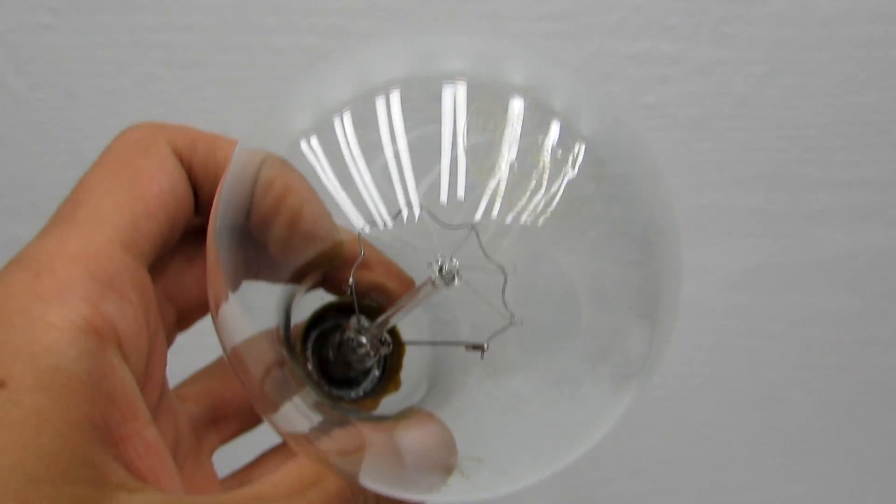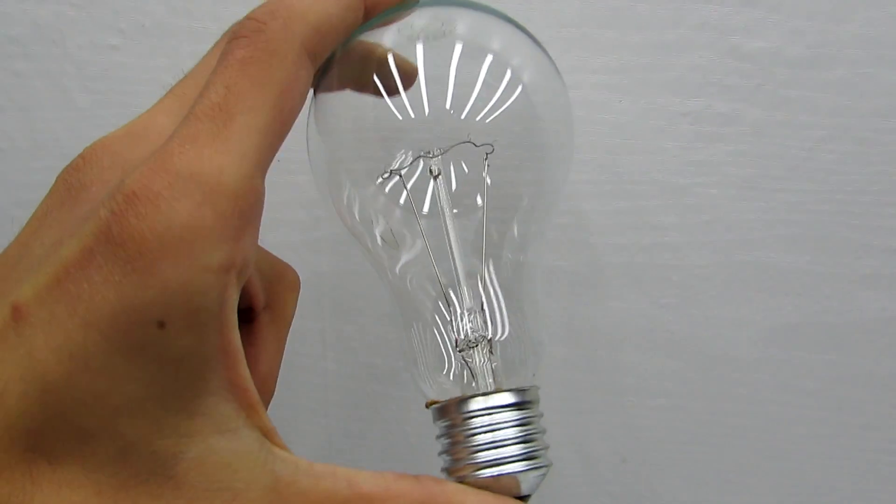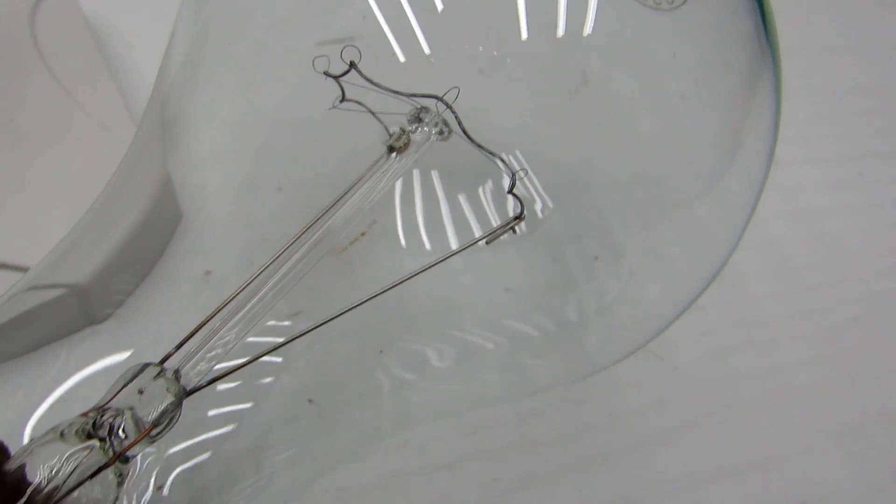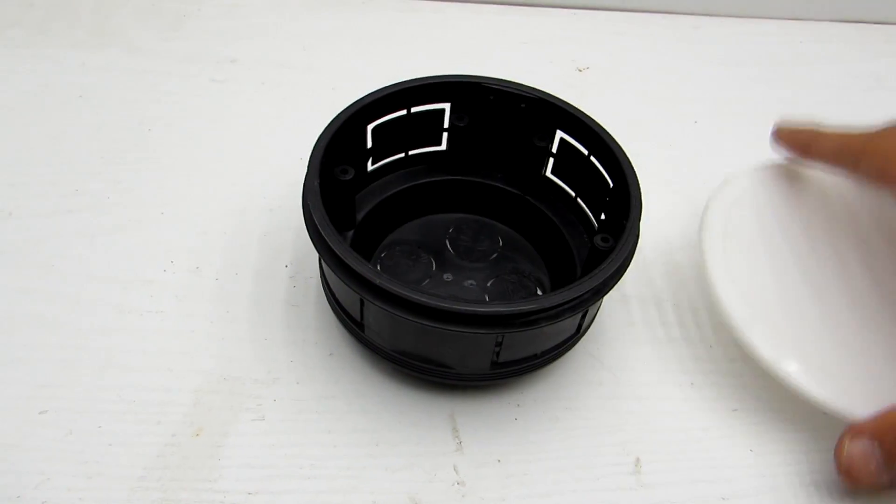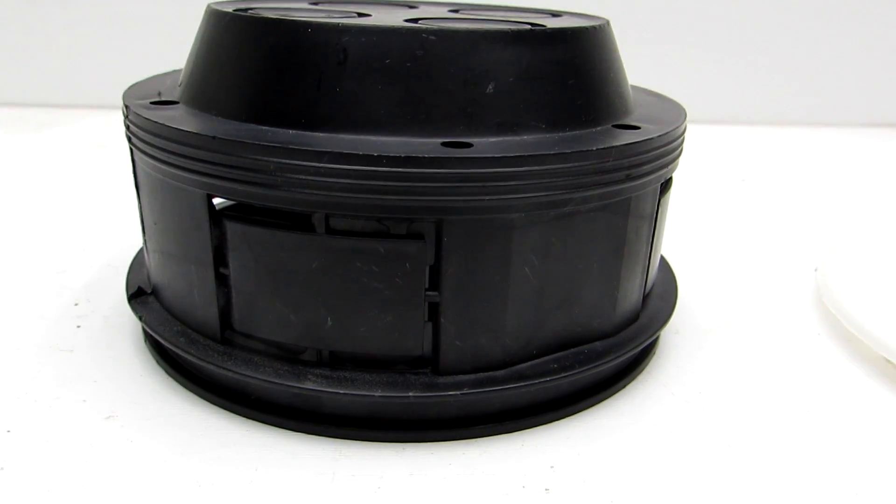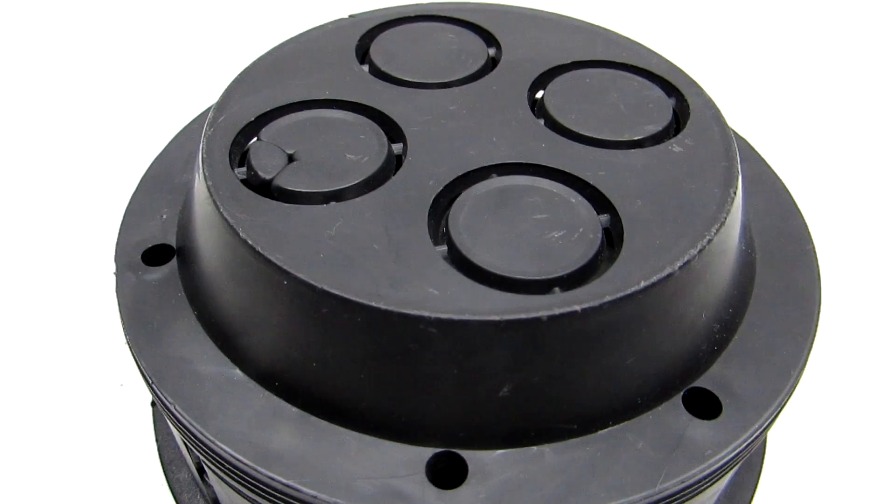First we need a common incandescent lamp. In my case it is a 150 Watt lamp, which I chose because of the size of the bulb. Next is the electrical junction box of any shape. All stuffings should fit there. It is cheap and can be purchased at any building materials store.